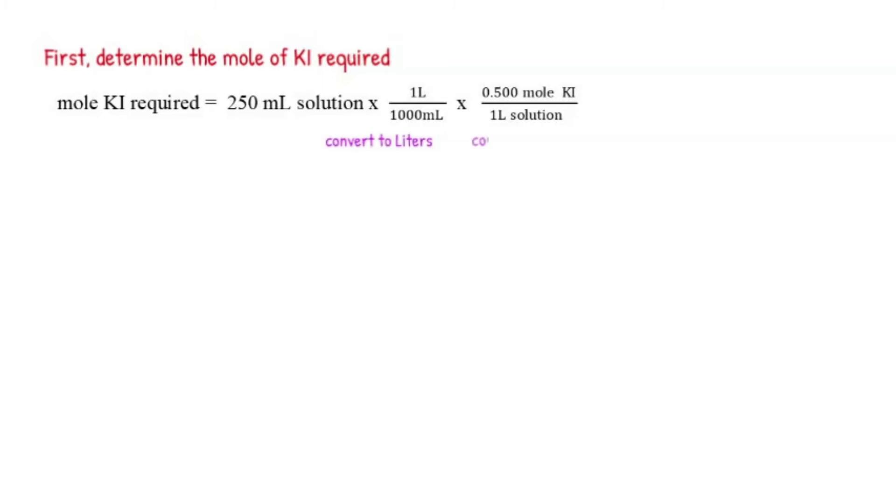First, determine the mole of KI (potassium iodide) required. The mole of KI required is equal to the volume of solution in mL, 250 mL, times 1 L over 1000 mL to convert this to liters, times the concentration of potassium iodide in moles per liter.